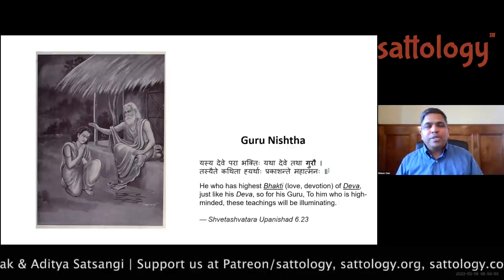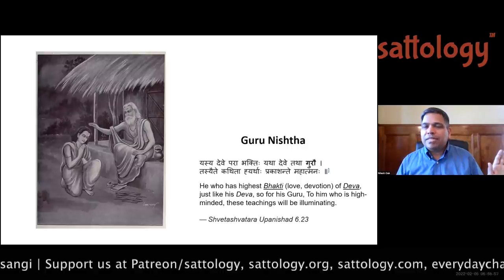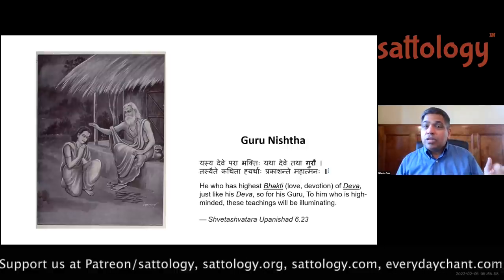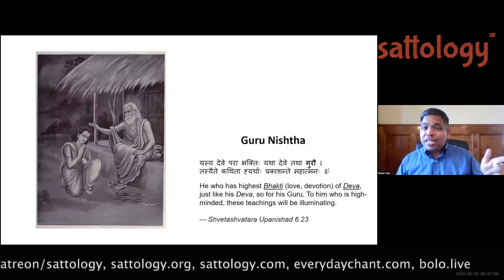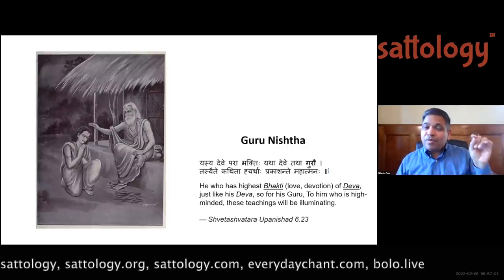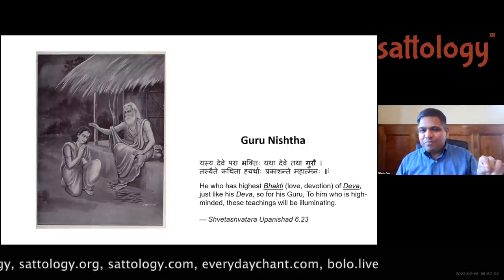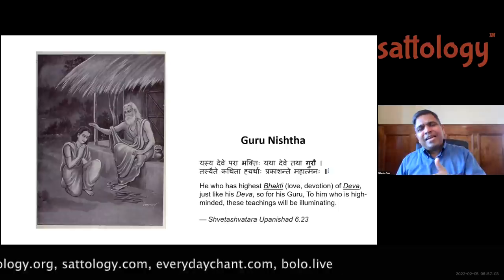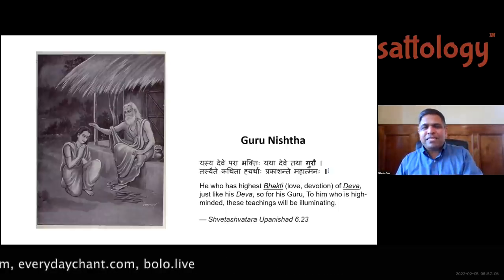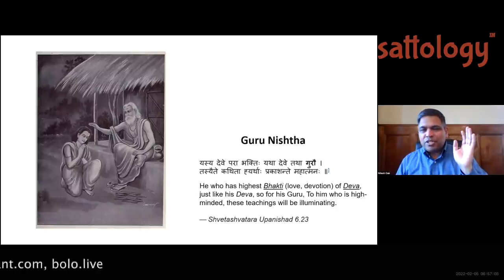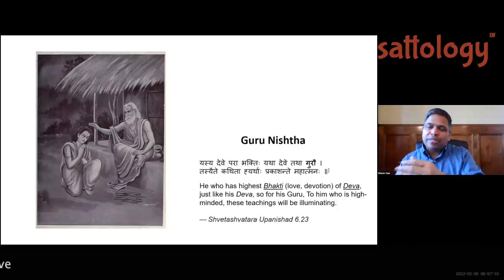Finally, sannyas ashrama is brahma nishtha. From Bhagavad Gita: the sanyasi is known as a permanent sanyasi who does not hate, does not desire, is without the dualities, the opposites — truly a mahabahu — liberated from bondage. That is brahma nishtha.